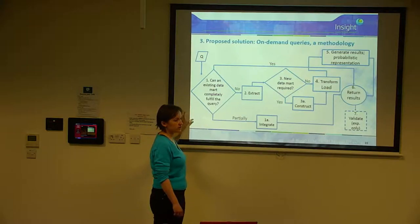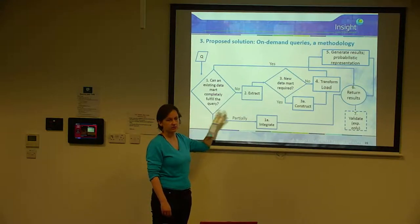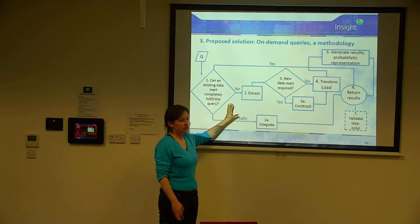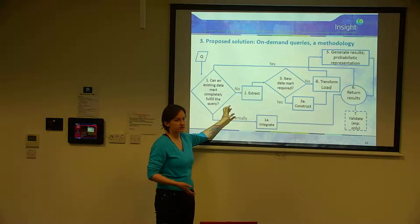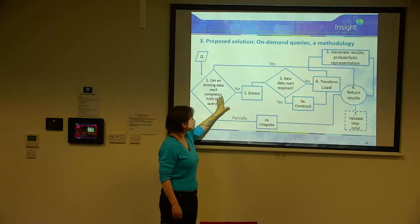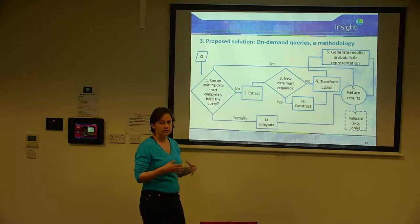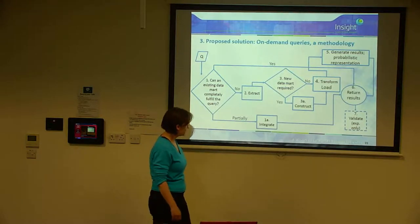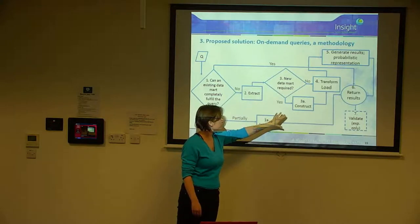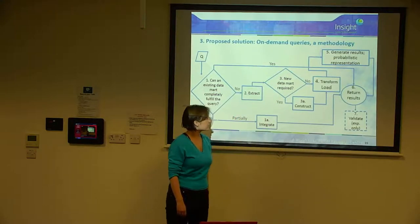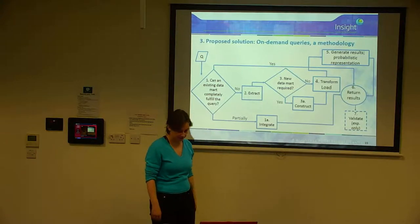The third possibility is that even with all existing data marts, the query cannot be fulfilled. In that case, we look at what data is stored but not yet imported to a data mart, extract what's needed, then ask: is a new data mart required or does an existing one need an update? If a new data mart is required, construct it. Then transform and load the data, generate results in a probabilistic representation, return the results, and for the experiment, validate.